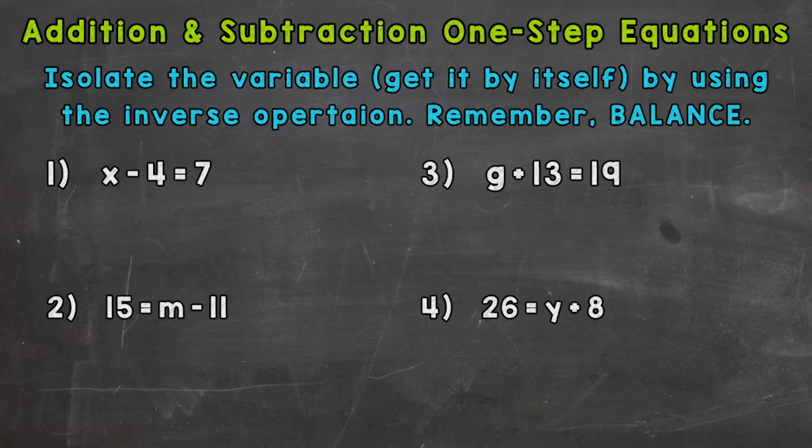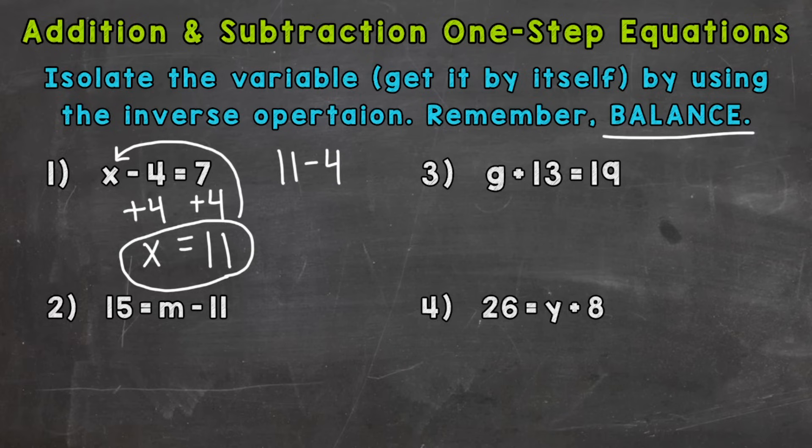Starting with number one, where we have x minus four equals seven. X is our variable that we need to isolate and we are subtracting four from x. So the inverse or opposite operation would be to add four. So let's add four to that side. That way the fours cancel out. But remember, keep everything balanced. So whatever we do to one side, we have to do to the other. So let's add four to the other side as well. So the fours on the left cancel each other out, leaving x by itself. We isolated that variable. Now, seven plus four on the right will give us 11. So x equals 11. And we can double check that we have the correct answer by plugging the 11 back into the equation. So 11 minus four equals seven, which is true. So we have the correct answer there, x equals 11.